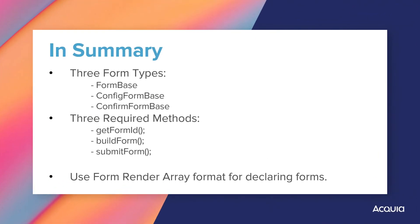Epic effort in understanding the fundamentals of Drupal's Form API. We learned that there are three types of forms in Drupal: FormBase, ConfigFormBase, and ConfirmFormBase. We learned that each form type has three required methods: getFormId, buildForm, and submitForm. We learned that forms are declared in render array format, returned in the buildForm method of the form type class that we extend. This is enough theory for now — we'll begin coding a form in the next videos.